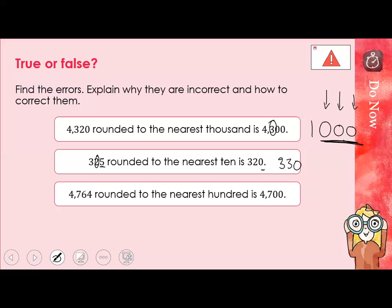And the last one, 4,764 rounding to the nearest hundred is 4,700. Okay, so this is a multiple of 100, because it's got the two zeros at the end. So that's a good start. Now, I'm rounding to the nearest hundred. So it's this number that's going to change the number in my hundreds column. Look to the right of it. It's a six, so I should have rounded up to the next hundred. So the answer should have been 4,800.